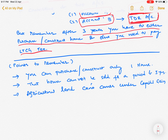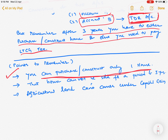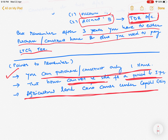Points to remember: you can purchase or construct only one house using those capital gains. Also, whatever house you have purchased or constructed cannot be sold for a period of three years. Most importantly, agricultural land transactions are not covered under capital gains tax. This has been a brief overview about capital gains tax, and we will see further information regarding capital gains.